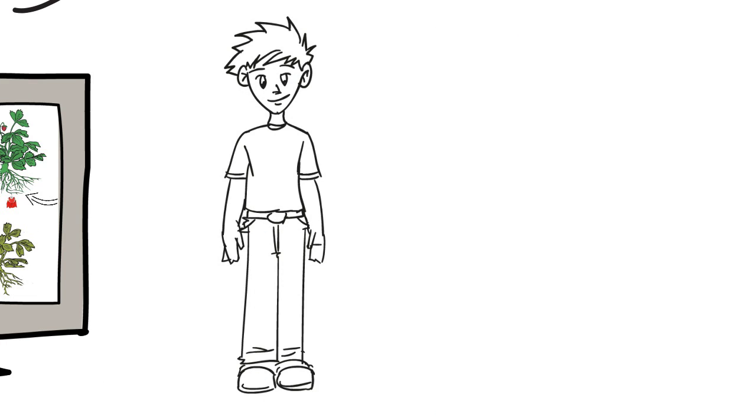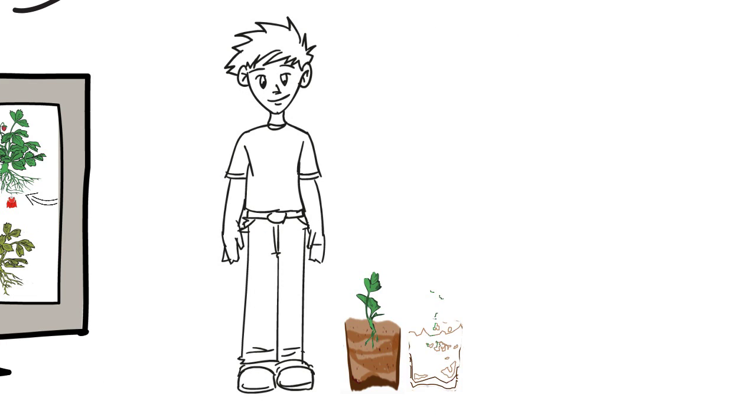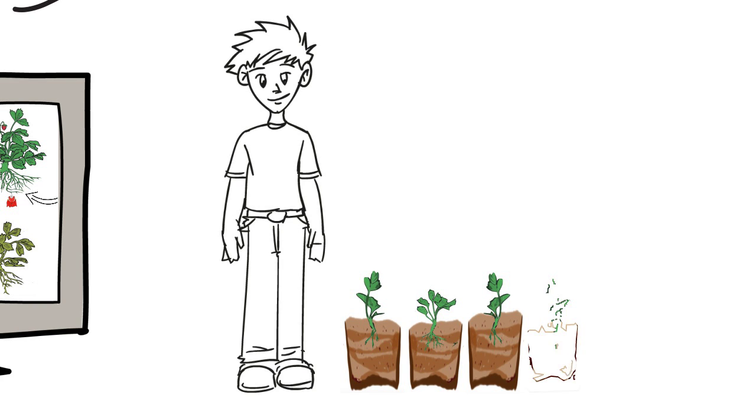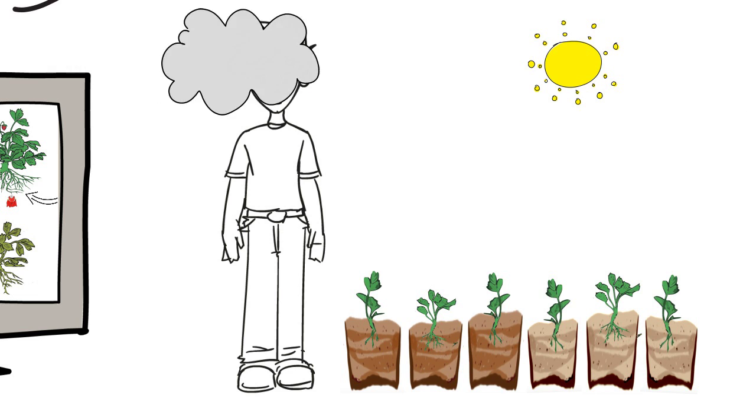I am going to grow some strawberries in washed sand where I know there will be no nutrients, and some in potting mix that I know has nutrients. I will keep all other variables, like sunlight and water, the same.